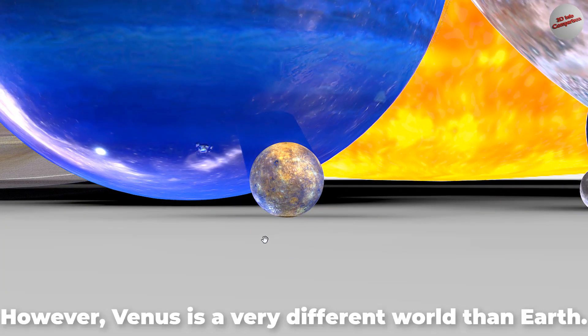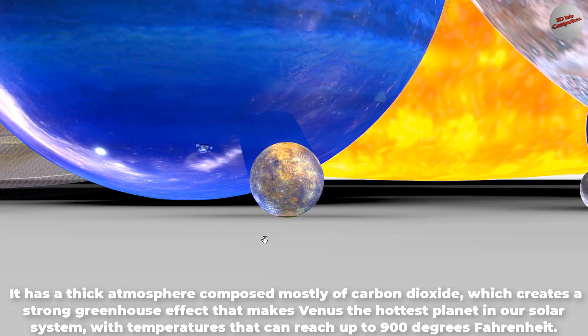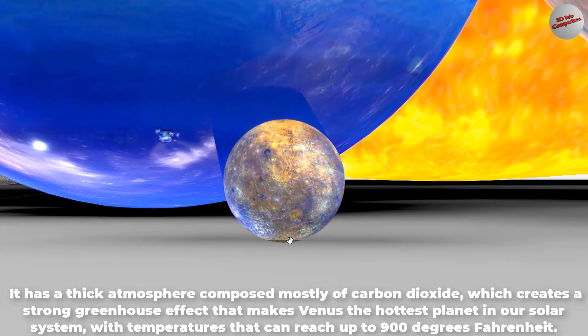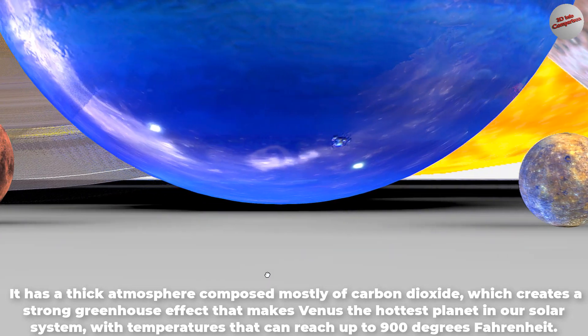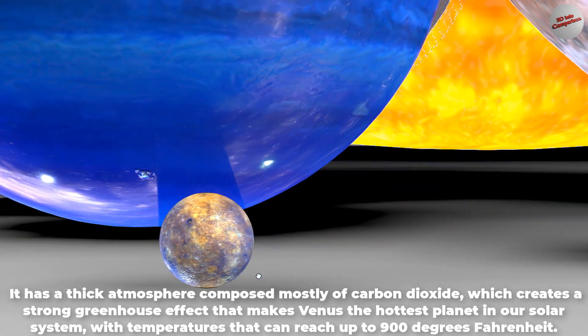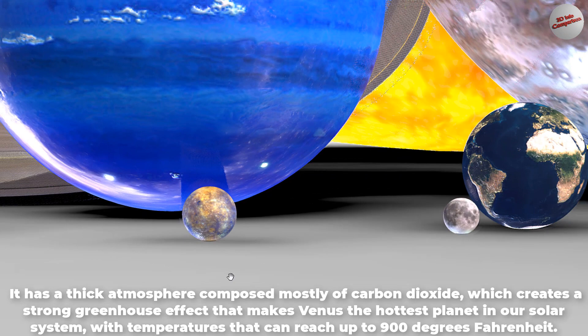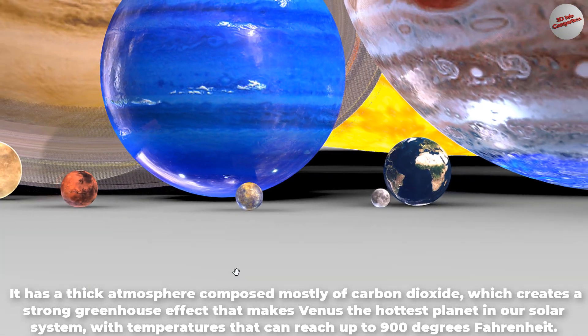However, Venus is a very different world than Earth. It has a thick atmosphere composed mostly of carbon dioxide, which creates a strong greenhouse effect that makes Venus the hottest planet in our solar system, with temperatures that can reach up to 900 degrees Fahrenheit.